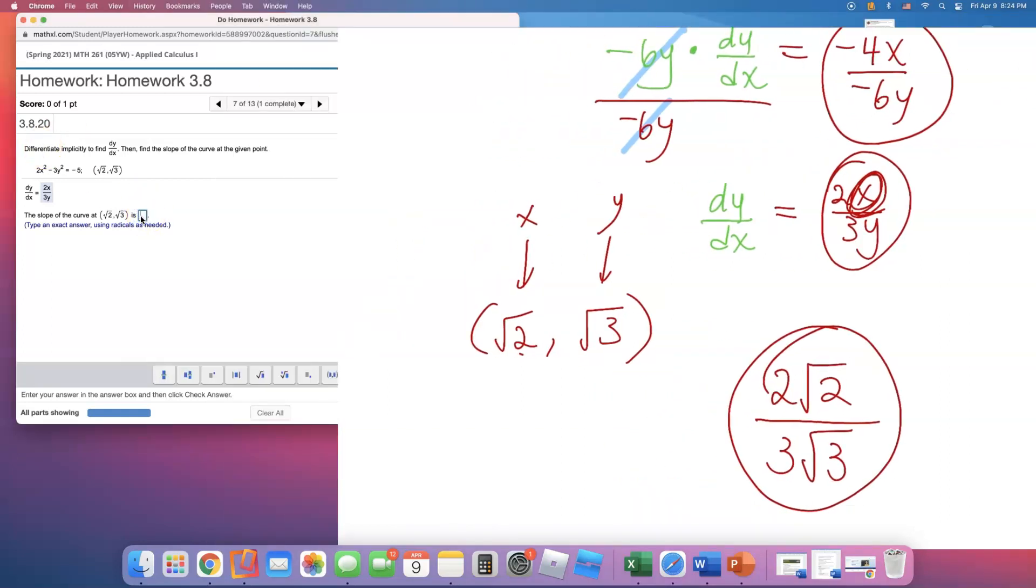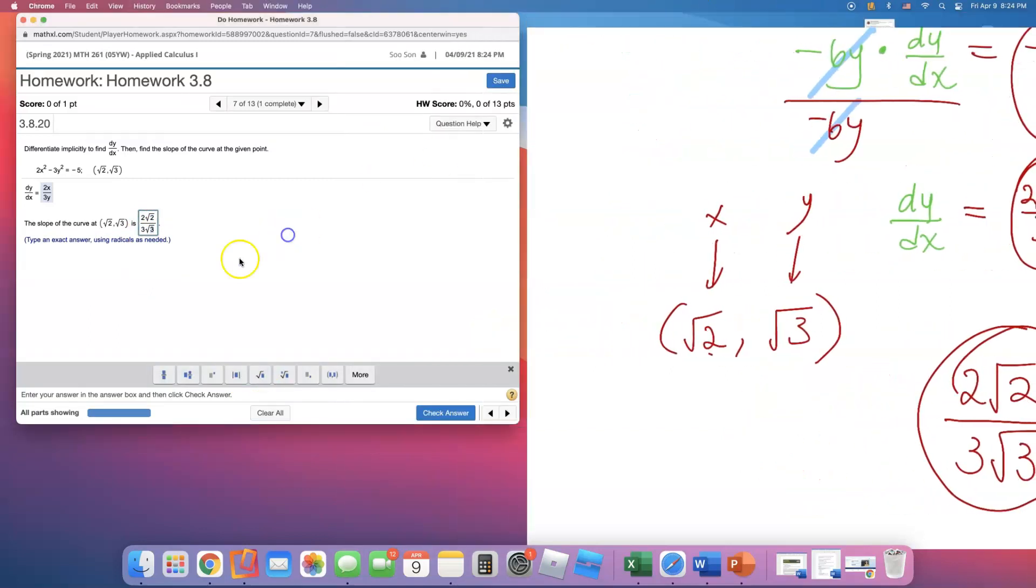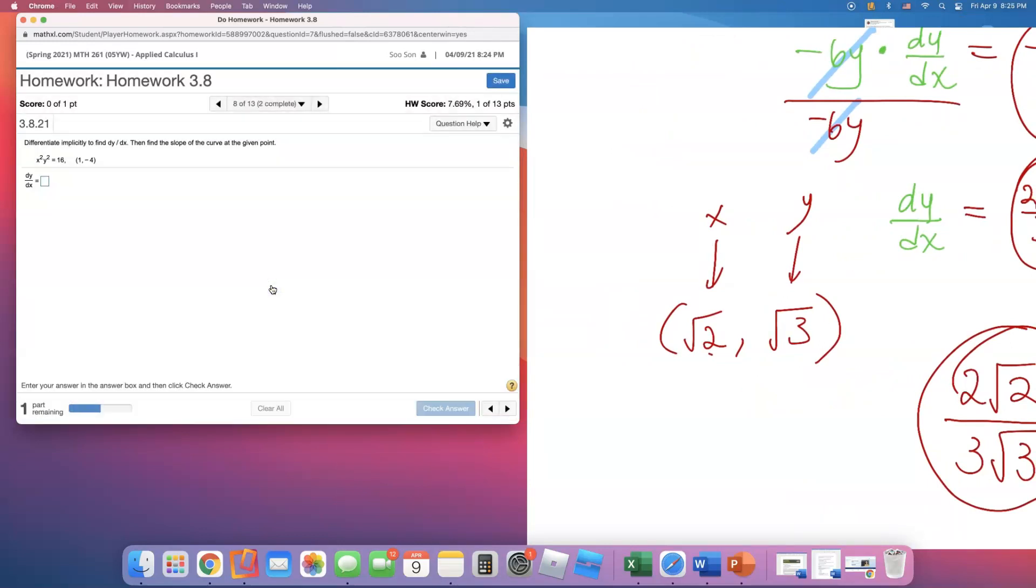So I need a fraction. 2 square root of 2 over 3 square root of 3. It's not that different. It's just the ordered pair was irrational. But you can just plug them in. That's what you can do.